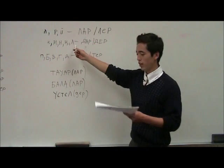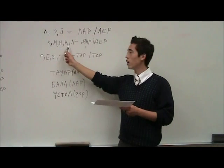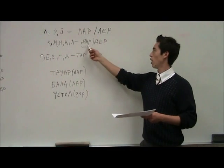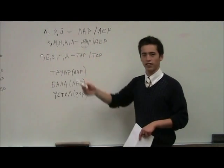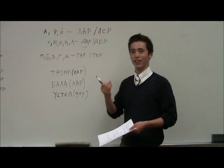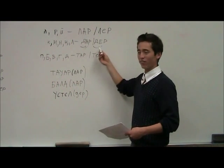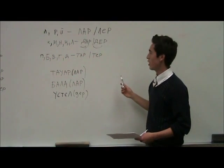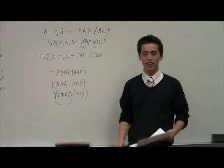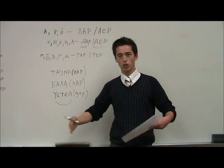Next, if the word ends with voiced consonants like k, m, n, or l, we add dar or dir. It's dar — we don't have an 'ur' like American pronunciation, so it's dar, dir. For example, the word 'stil'. Stil is a table. If you want to say tables, it becomes 'stildir'.